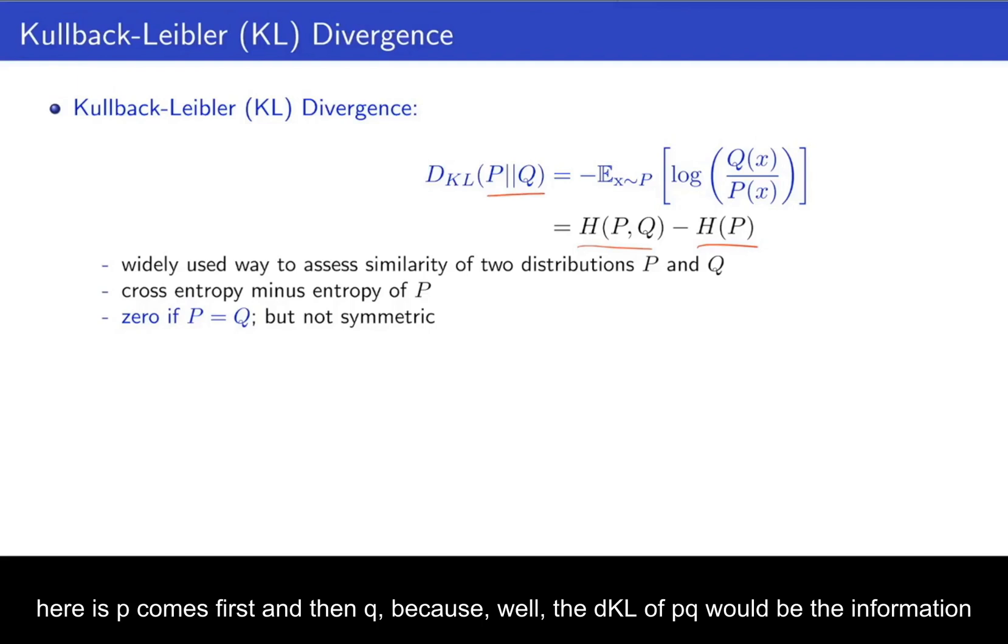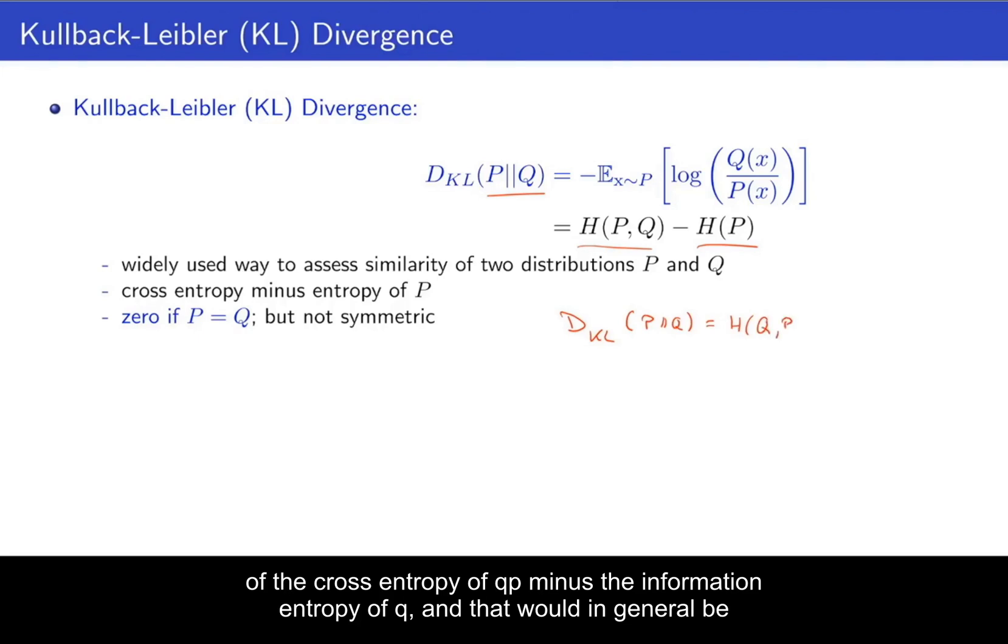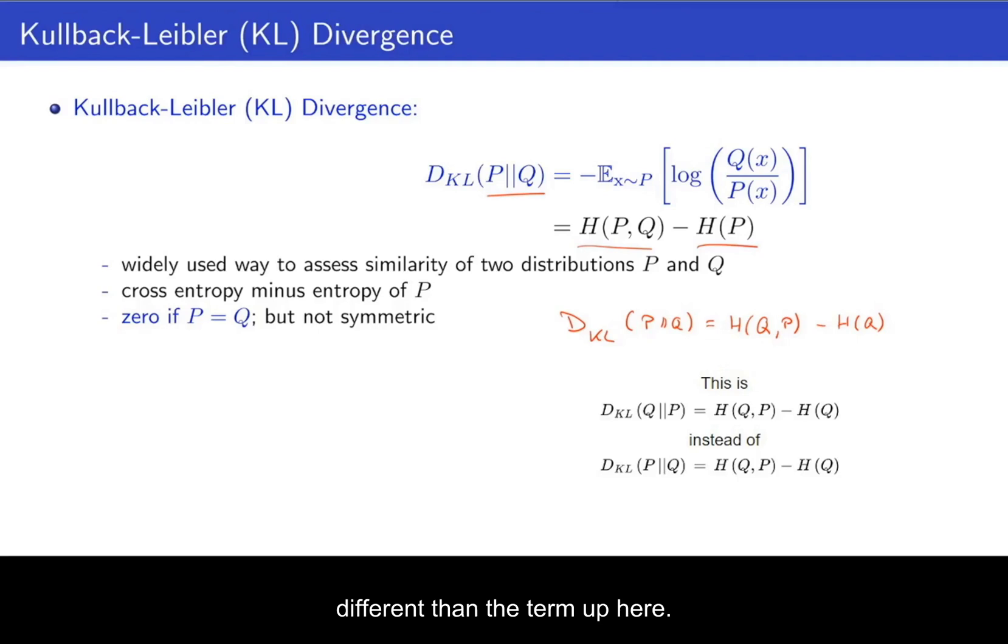well, the DKL(P||Q) would be the cross-entropy of Q||P minus the information entropy of Q. And that would, in general, be different than the term up here. And we'll see in a bit how they differ. Alright, so that's the KL divergence.